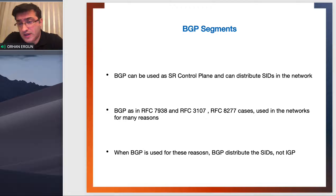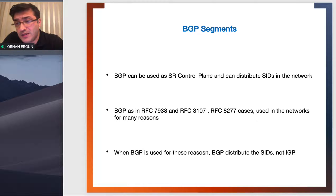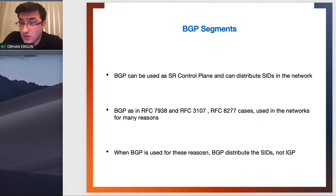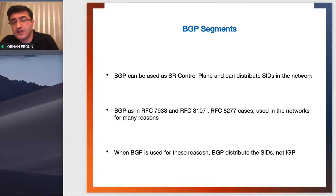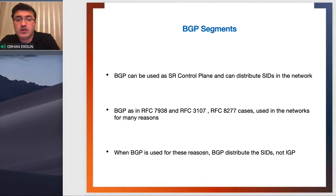BGP is used for many reasons — for example, flow specs, BGP multicast, and VPNs to distribute the overlay signaling between the PEs, customer signalings, etc. BGP is used for many purposes, and segment routing is just another one. When BGP is used to advertise IP prefixes, then BGP distributes the SIDs — not the IGP.